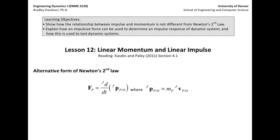Hey folks, in lesson 12 we've now started chapter 4 in the Kasdan and Paley book, and what we're going to start doing is applying F equals ma in some unique ways. Our first topic is linear momentum and impulse, we'll do angular momentum and impulse, and then in the next chapter we'll start looking at energy. These are simply alternative forms of Newton's second law, and chapter 3 was really the foundational chapter of the entire book. Let's get started on linear momentum and linear impulse.